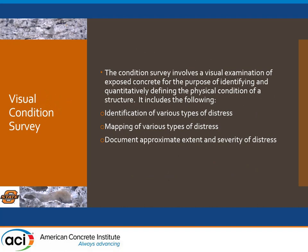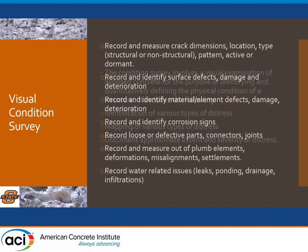What is a visual condition survey? We're really looking at identifying various types of distress — that is the first and foremost important thing. We need to properly identify what we see so we can make the proper diagnostic. With that, we need to map them, and if we're preparing a repair scheme or experimental program, we need to provide maps and have approximate extent and severity.